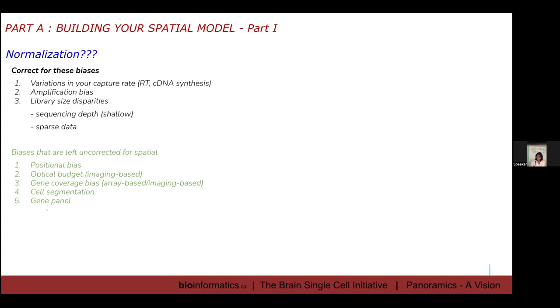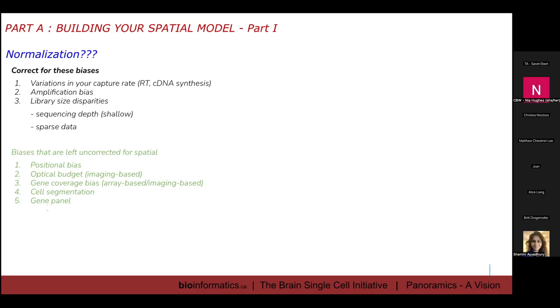So when you correct for these biases, we have plenty of normalization methods that have been developed to correct for these biases. So these are basically you want to distribute, so any kind of errors that you get from your capture rate, you want to distribute it so that it kind of averages out. And you want to reduce your amplification bias, and you want to reduce library size disparities so that everything is kind of evened out so that you can look at your data in equity.